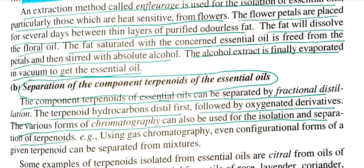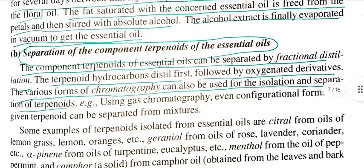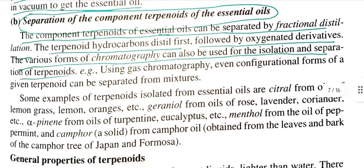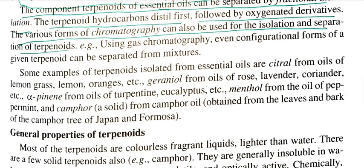Separation of components of terpenoids of essential oils: the component terpenoids of essential oils can be separated by fractional distillation. The terpenoid hydrocarbons distill first, followed by oxygenated derivatives. Various forms of chromatography can also be used for the isolation and separation of terpenoids. For example, fractional distillation is used for citral from lemongrass oil.